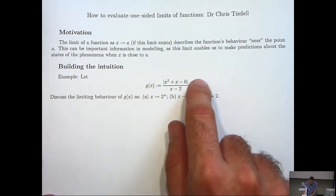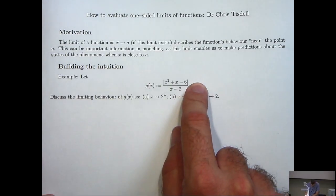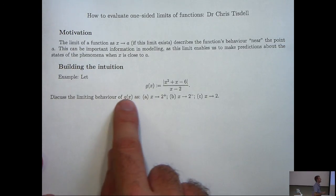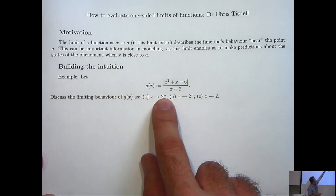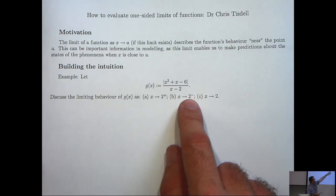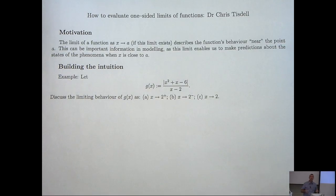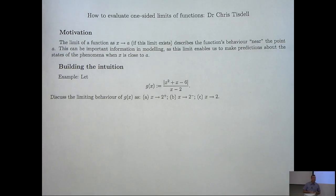The particular function we're going to look at is defined here, and we're asked to discuss the limiting behavior of g(x) as x approaches 2 from the right, as x approaches 2 from the left, and as x approaches 2. So parts a and b involve one-sided limits, and part c involves a general limit.